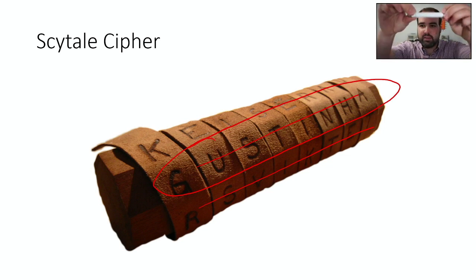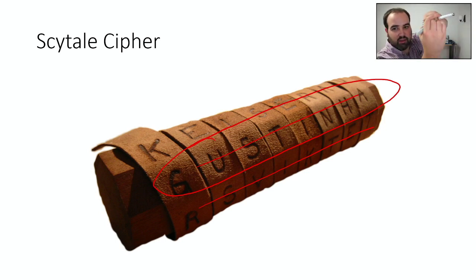All right. So you can see, hopefully, let's see if this focuses. There's a message and all we would do is if I write a message across and you could try to get one character on each zone. So if I say hello and then I'll go to the next line.